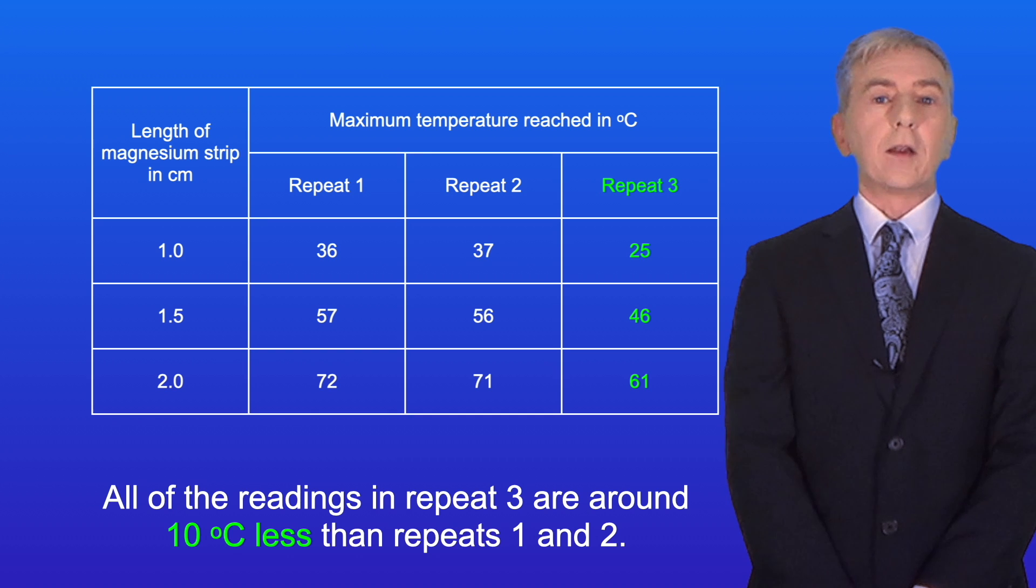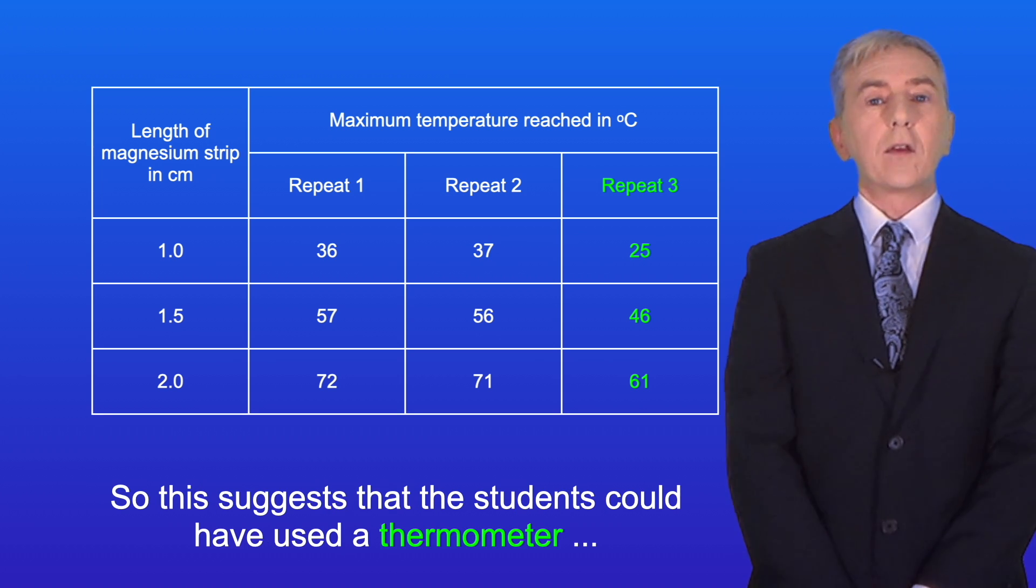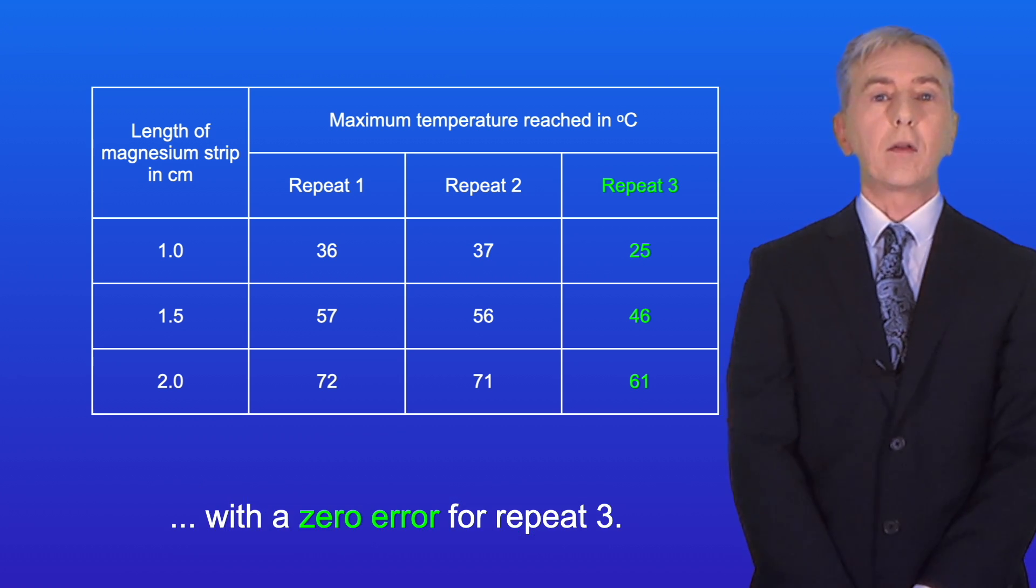All of the readings in repeat three are around 10 degrees celsius less than repeats one and two. So this suggests that the students could have used a thermometer with a zero error for repeat three.